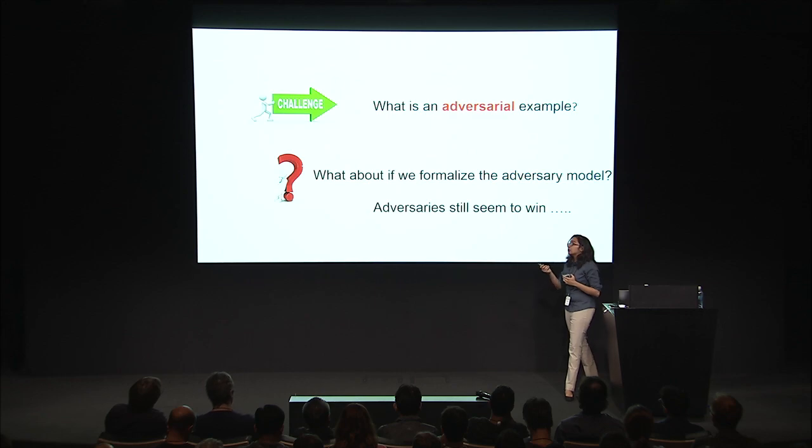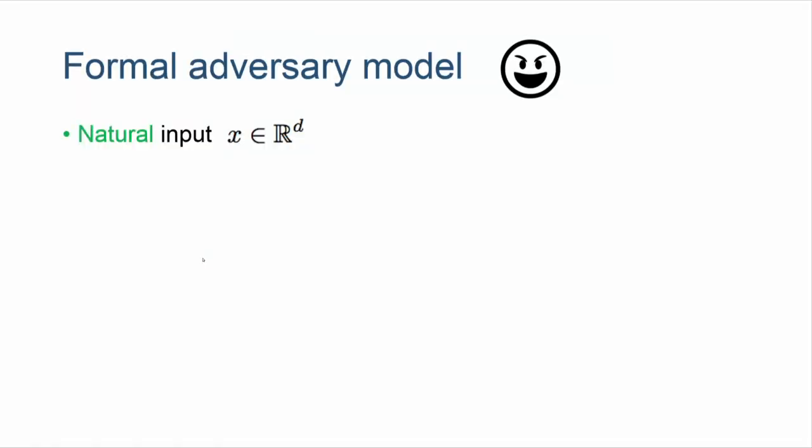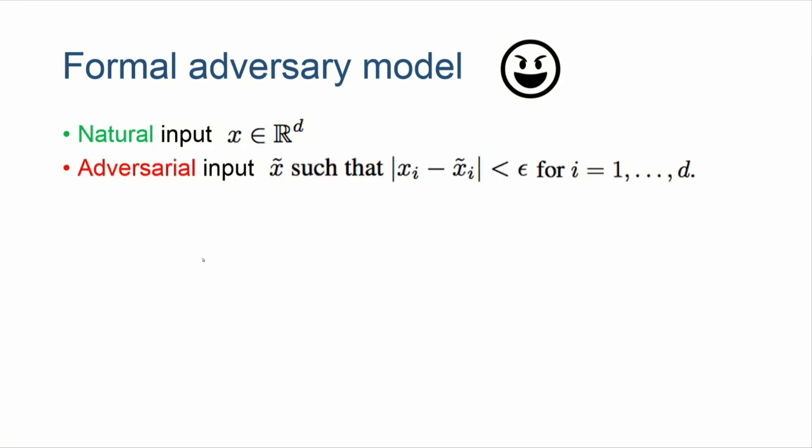Even if we simplify the problem by formalizing what an adversarial example is and fixing the adversary model — fixing what an adversary can do to harm you — the adversaries still seem to win. The community is interested in the adversary model where natural inputs are x in some d-dimensional space, and the adversarial input is one where the adversary can change each feature, or in the case of images each pixel, by a small quantity epsilon, feeding this perturbed input to the classifier. We can think of this as an epsilon ball, and we've fixed L-infinity as a natural notion.